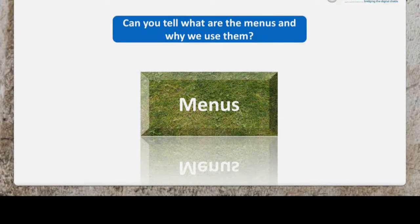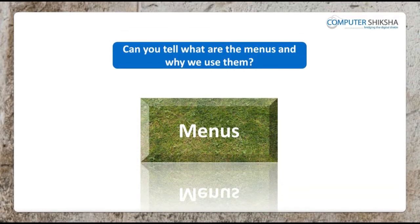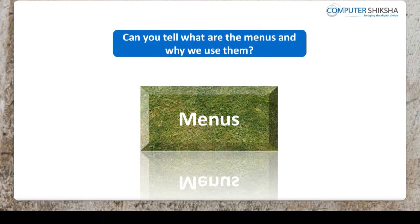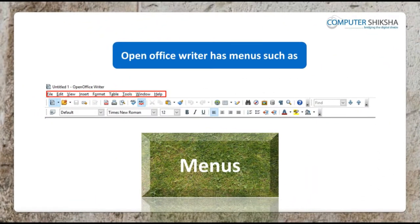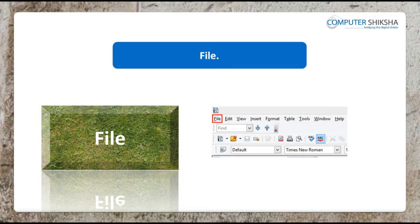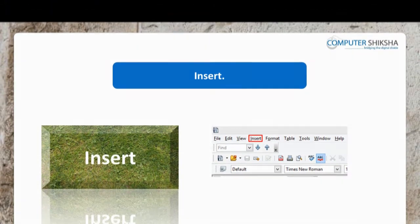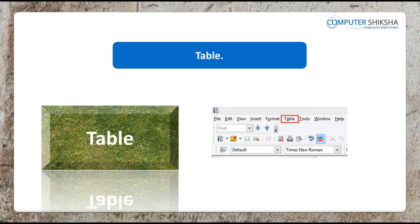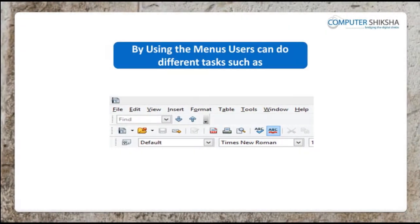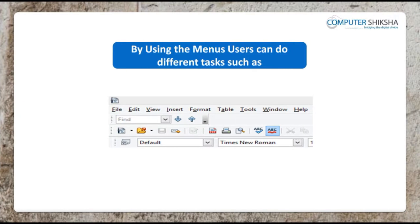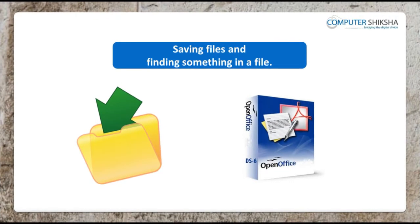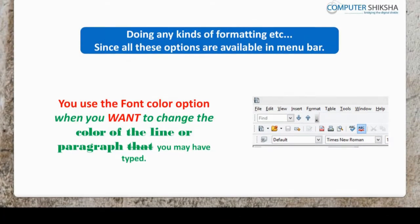Can you tell what are the menus and why do we use them? OpenOffice has menus for File, Edit, View, Insert, Format, Table, and Tools. These menus help you get your work done, like to save or find something in a file, do any type of formatting, etc.